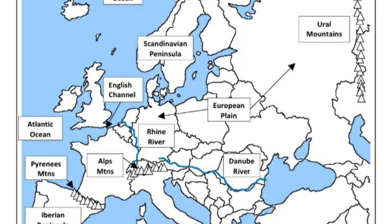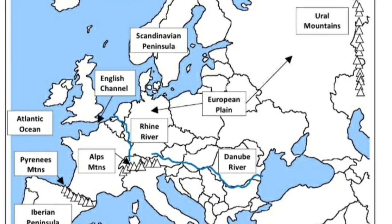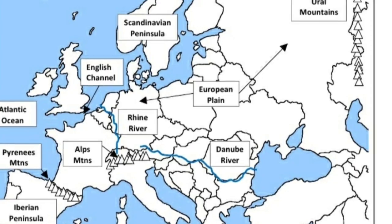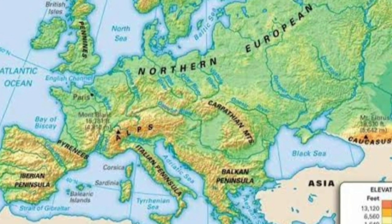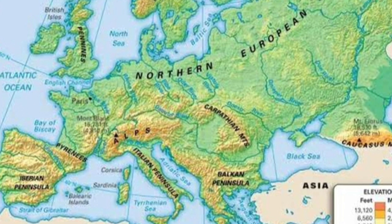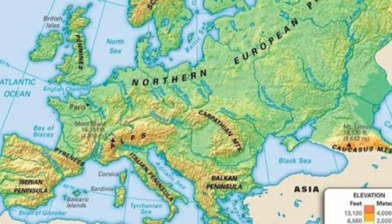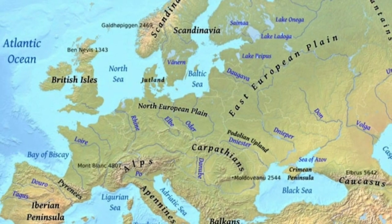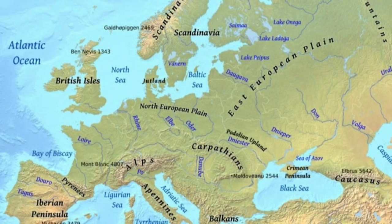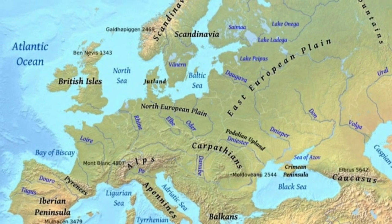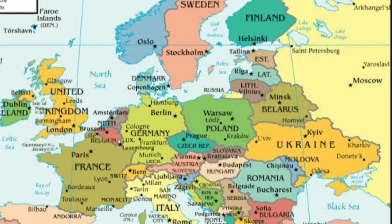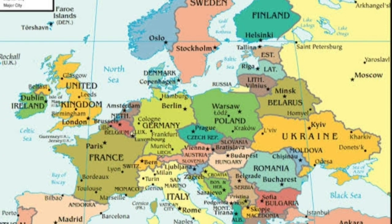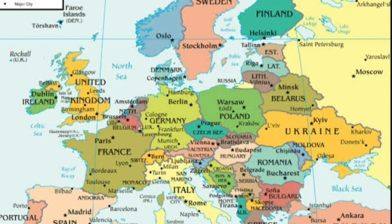With this, we come to an end with the map pointing portion with reference to Europe's physical and political features. Students can purchase and use the physical and political map from the nearest stationery store for their map work. Hope you have understood the portion taught. Make sure you complete your work neatly and have lots of fun with map pointing. In the next class, we shall meet again to deal with an entirely new chapter. Till then, take care of yourself, be safe, and we shall meet soon.